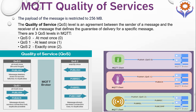About quality of service — MQTT has three levels of quality of service: QoS 0, QoS 1, and QoS 2. The payload of the message is restricted up to 256 MB. For quality of service 0, there is no guarantee of delivery. The recipient does not acknowledge receipt of the message, and the message is not stored or retransmitted by the sender. So QoS 0 is very fast, but there is no acknowledgment.